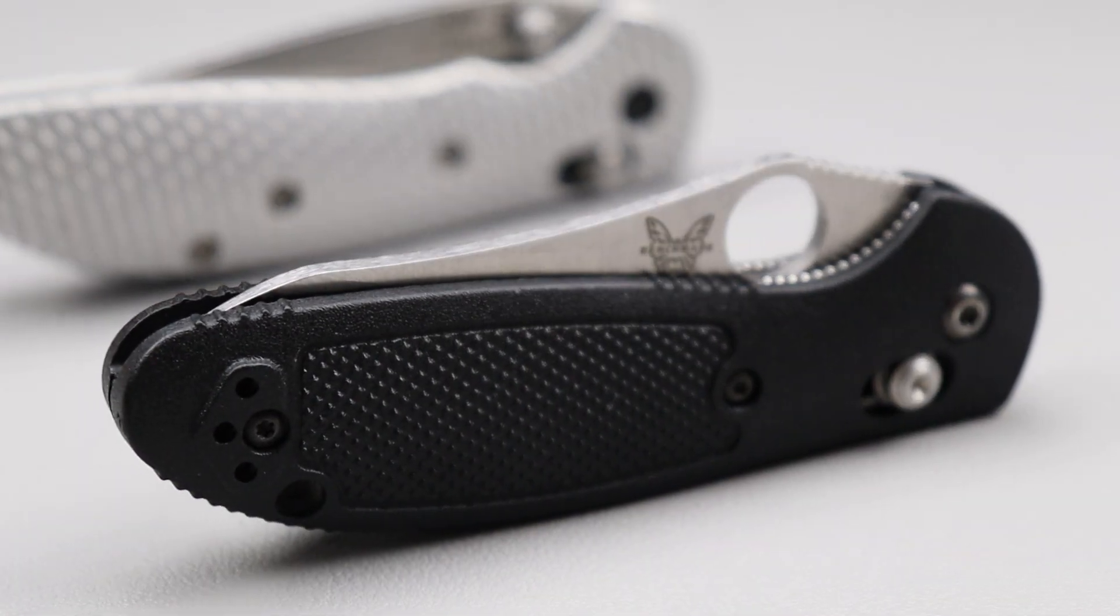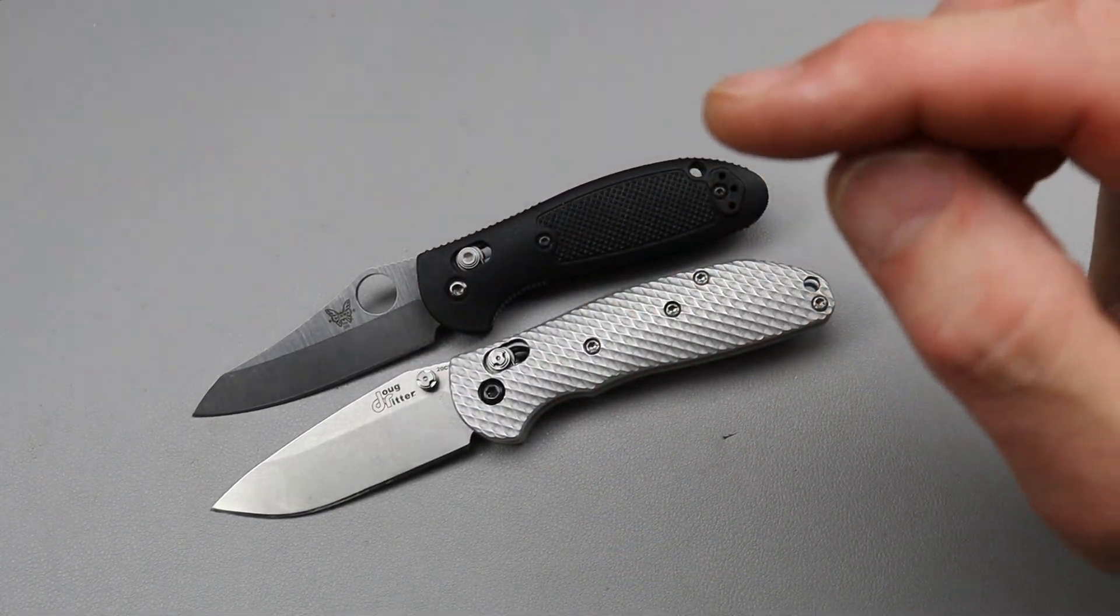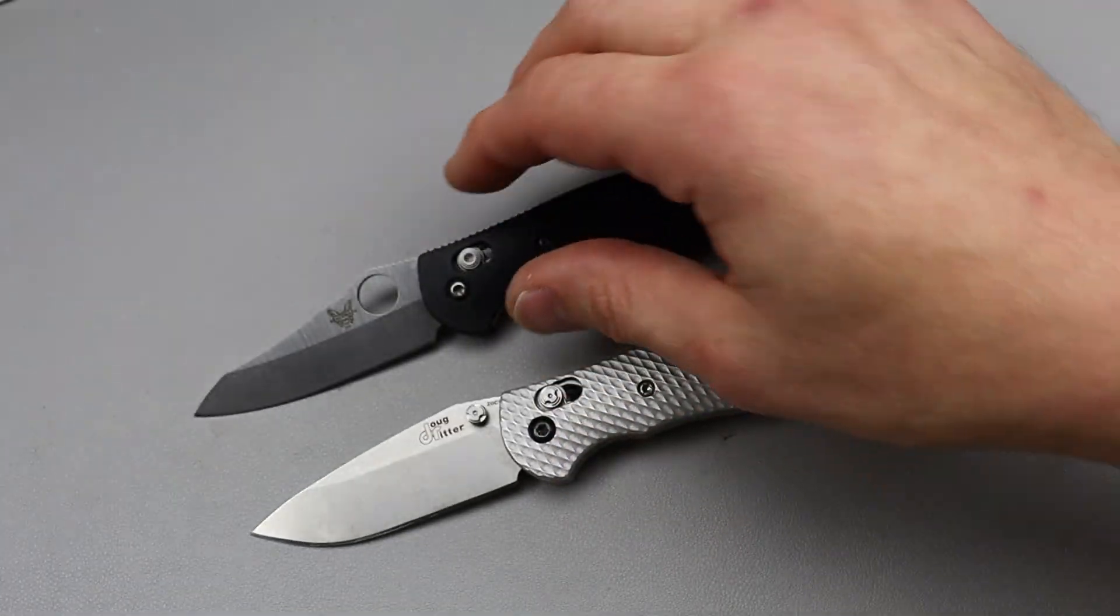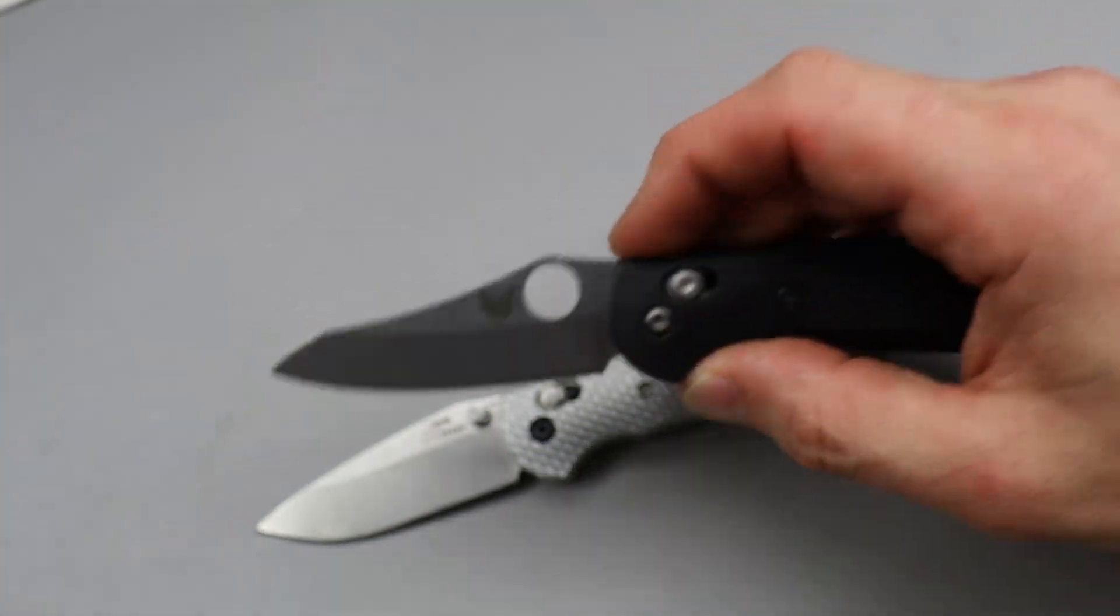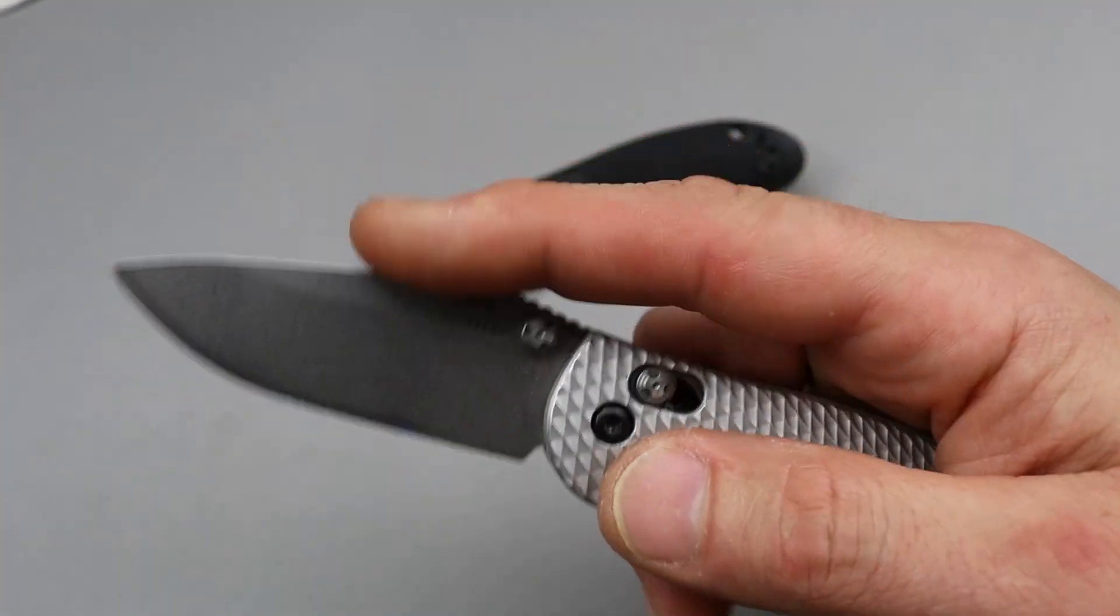Everybody always says that the RSK is a Griptilian killer. I disagree. Not that I don't love the RSK because I do, I really do. But when you're talking about this sheep's foot blade, to me this blade shape 100% is better than this blade shape. Not that this is a bad blade shape.